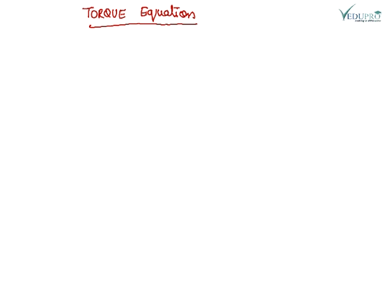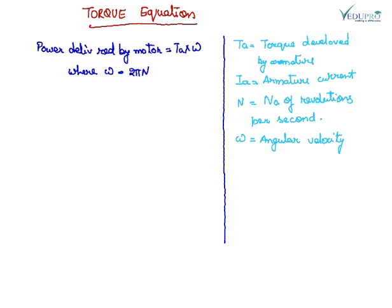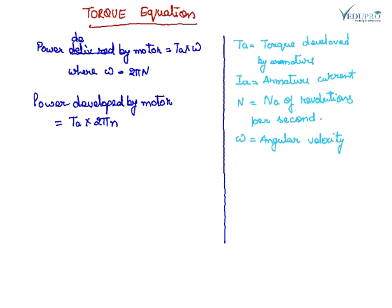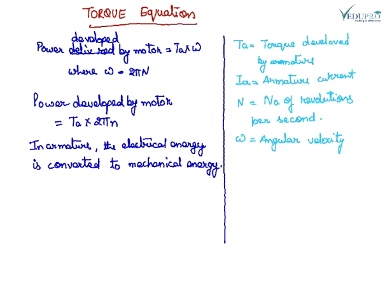Now let's find out the torque equation of the motor. Power developed by the motor is equal to TA into omega, where TA is the torque developed by the armature and omega is the angular velocity, which is 2 pi N. So power developed by the motor is TA into 2 pi N. In the armature, the electrical energy is converted into mechanical energy, which is equal to EB into IA.